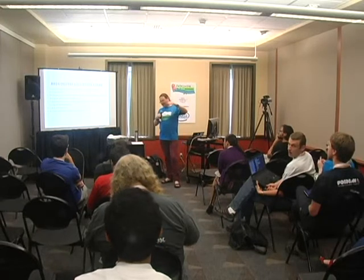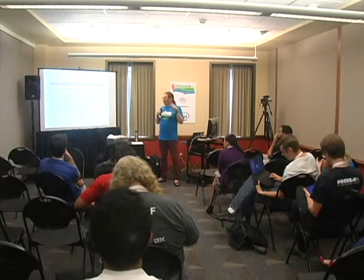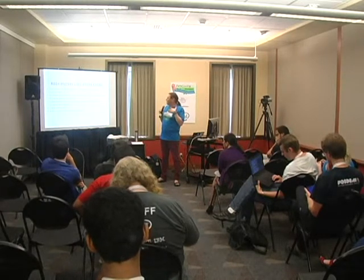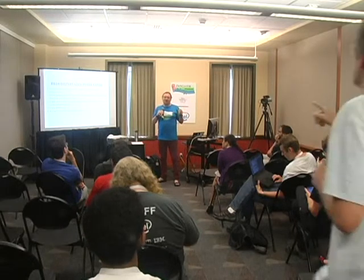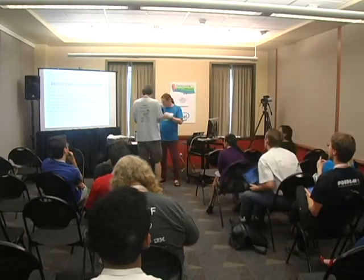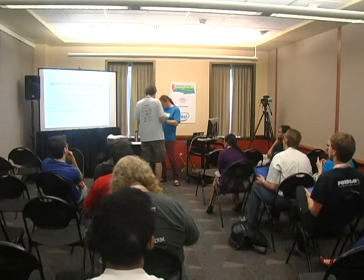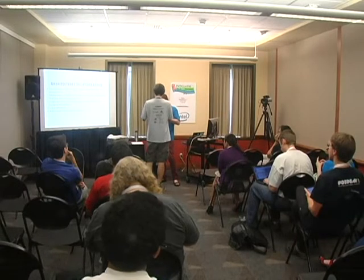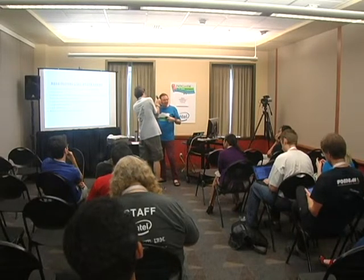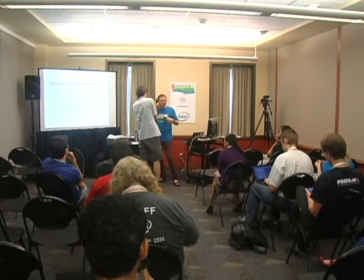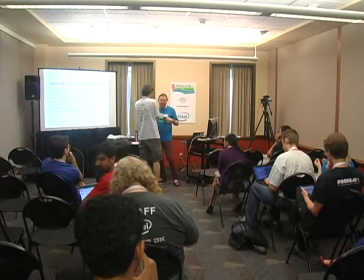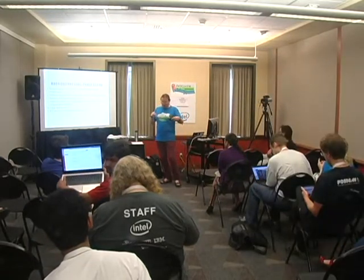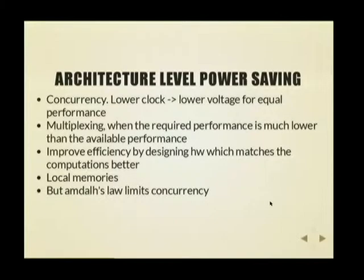Going up from the transistor level, at the gate level you can also design your hardware to be more power efficient. You can do that, for example, by using concurrency. If you increase concurrency, you can try to obtain the required performance level at a lower clock, and lower clocks can mean lower voltages, which means lower power consumption.